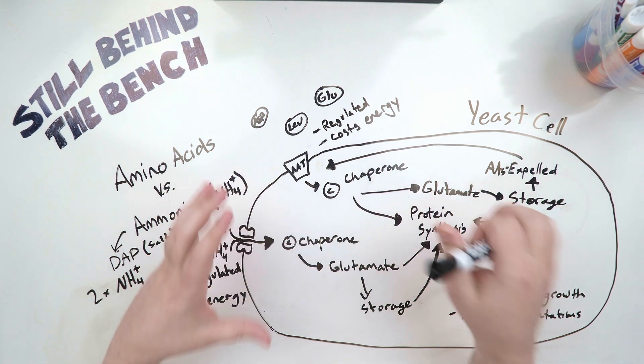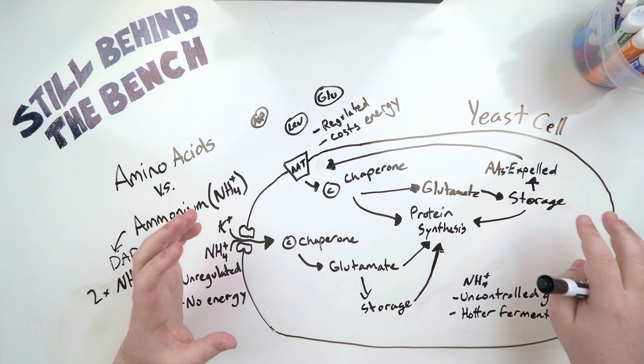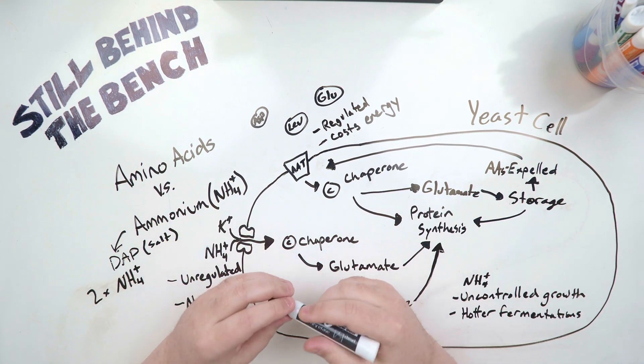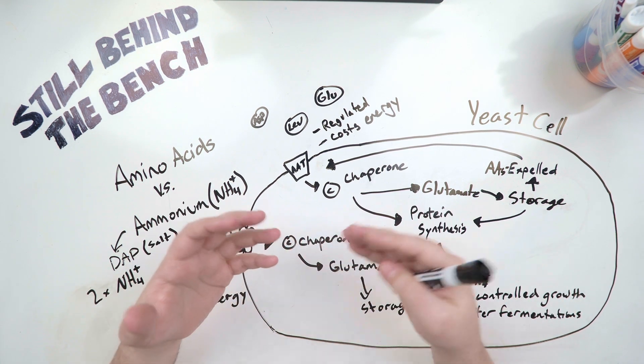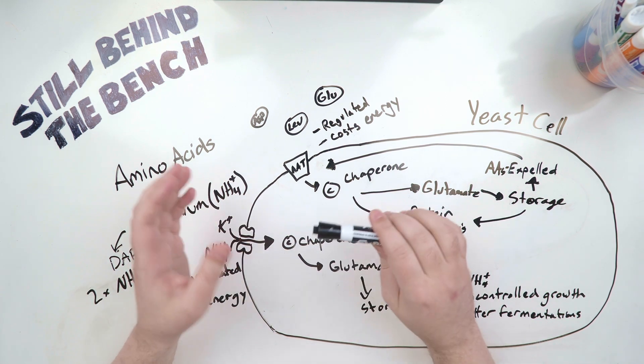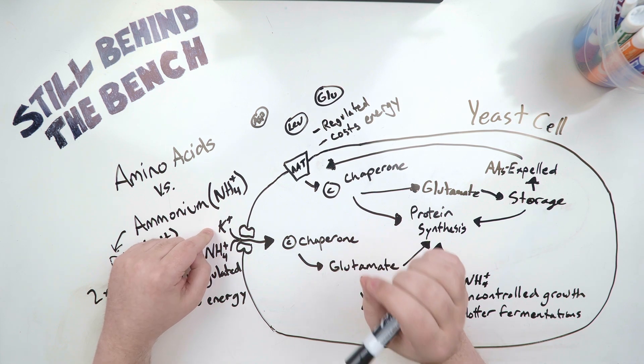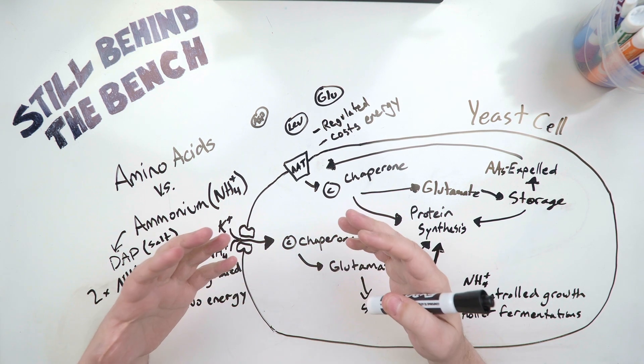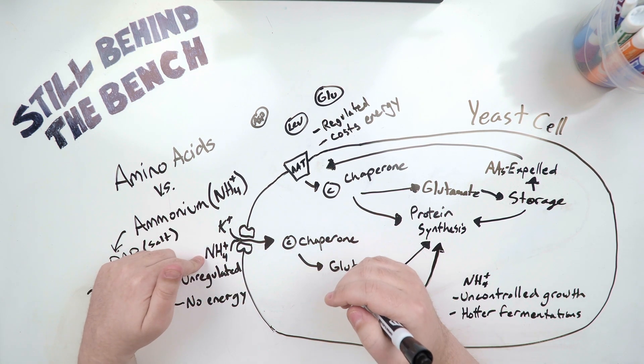Let's look at the ammonium first. First you need to know that the surface of the cell membrane of a yeast cell has a bunch of ion channels in it, like the calcium ion channels I discussed in the video on why some spirits burn when you drink them. In this case though they are potassium ion channels. These potassium ion channels just so happen to also allow ammonium ions through them.